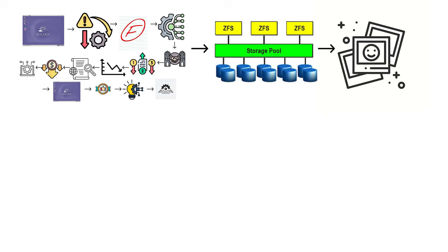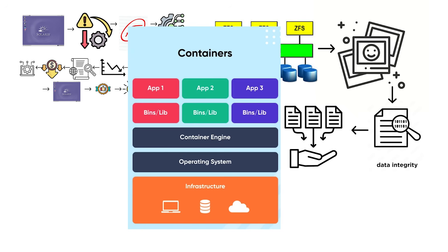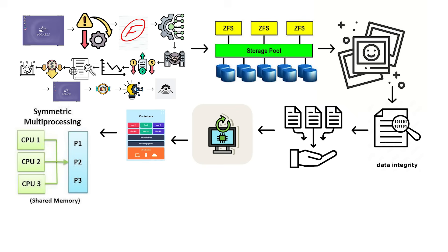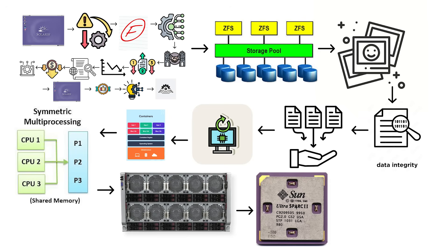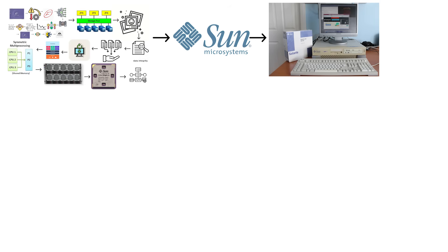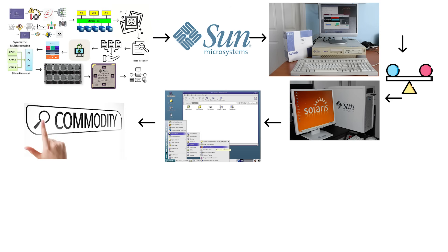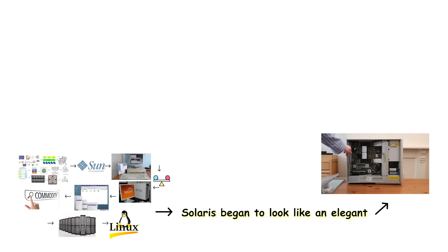Its ZFS file system provided snapshots, data integrity checks, and storage pooling at a time when similar features required expensive third-party hardware. Its container system allowed isolated environments long before containerization became mainstream. Its symmetric multiprocessing support made Solaris ideal for large multi-CPU servers. The operating system ran primarily on SPARC hardware, a processor architecture designed by Sun. This tight integration produced stable and highly optimized systems, but it also made the platform increasingly niche. As the industry moved toward commodity x86 servers running Linux, Solaris began to look like an elegant but expensive solution to problems cheaper machines could also solve.